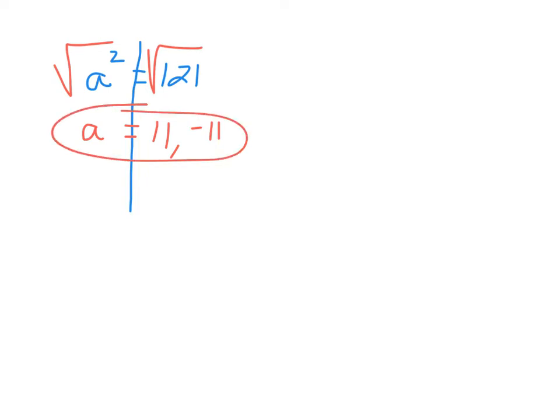Almost any time that you square root both sides of an equation, you're going to get two answers. You don't usually learn that in introductory algebra so much. It kind of comes up later as you go through a little bit more complex equations.